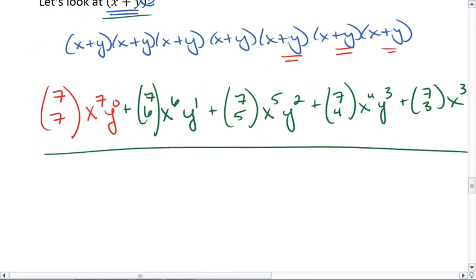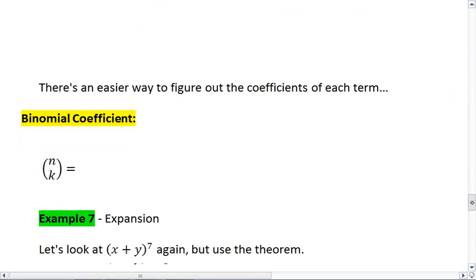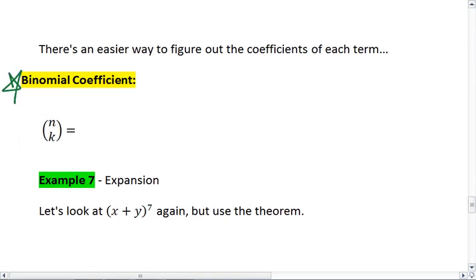Before I figure out what this is any further, I do want to make sure that you understand this binomial coefficient. So if I have something that's written n over k, this is the same as n choose k—it's a combination, which is n factorial over n minus k factorial times k factorial.